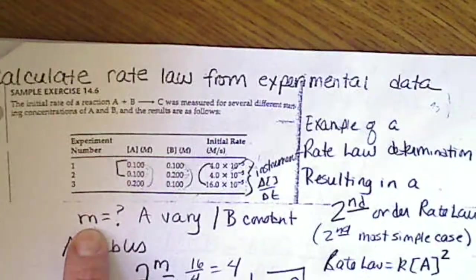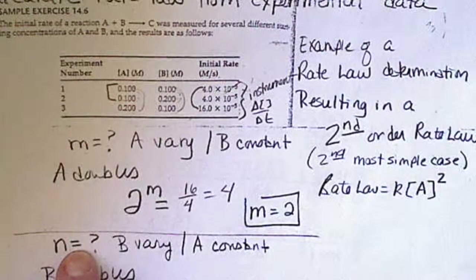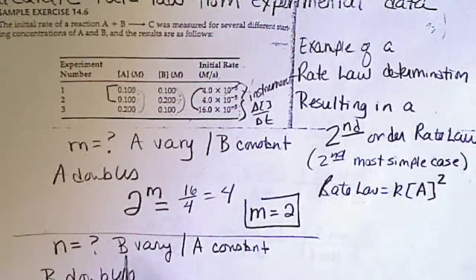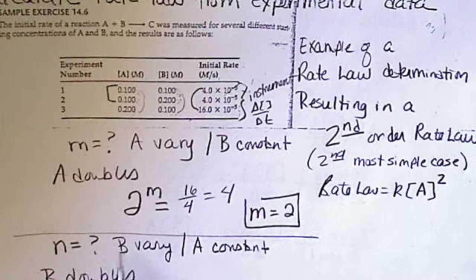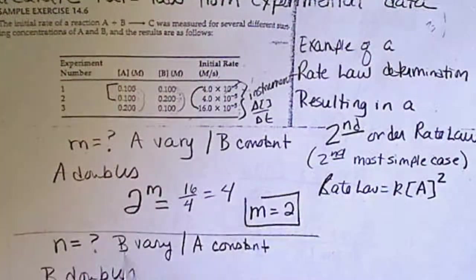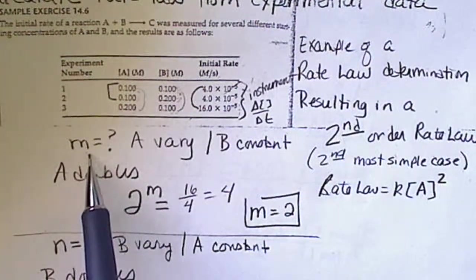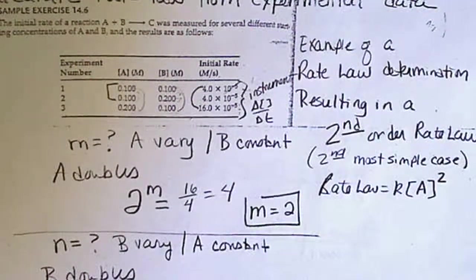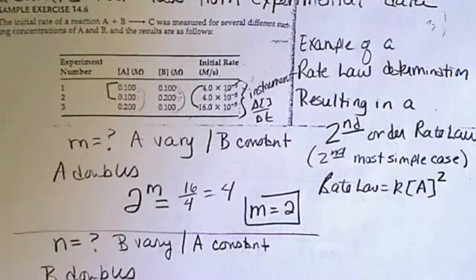M can be anything and N could be anything. But if we have the special condition of the second reactant has no effect on the rate and the first reactant is raised to the second power or the first power, then we have the two simplest cases.